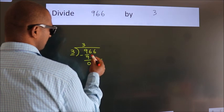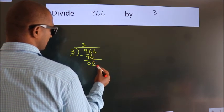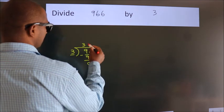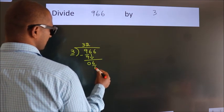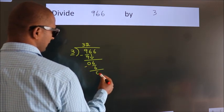After this, bring down the beside number. So, 6 down. When do we get 6 in the 3 table? 3 2's are 6. Now we subtract and we get 0.